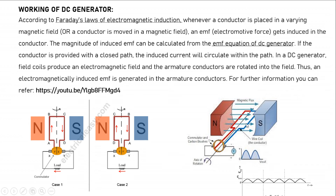When the armature is rotated it will cut the flux. EMF will be induced in the armature conductors. When EMF is induced and if you provide a closed path, current will start circulating in the circuit through the commutators and brushes, which take the current to the external circuit. The initially produced voltage or current is AC, and using the commutator segment this bidirectional voltage is converted into unidirectional DC, which is supplied to the external load. This is the working principle of DC generator.